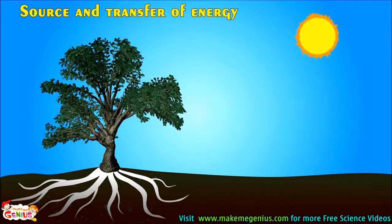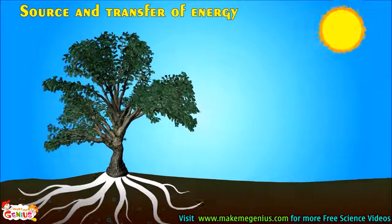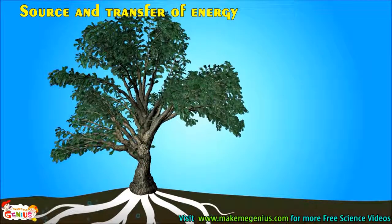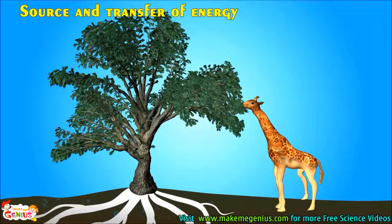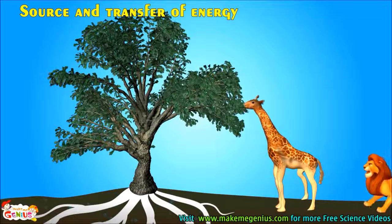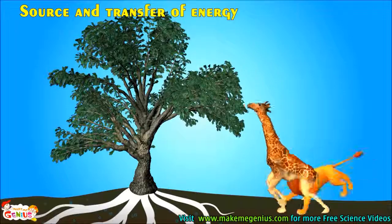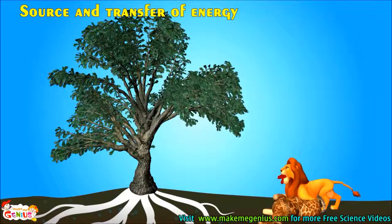Most living species use the sun's energy, which is transferred to the body via the food they eat. The sun gives light energy, which is used by plants to make food through photosynthesis. These plants are eaten by primary consumers and energy is transferred to them. Then secondary consumers eat these primary consumers and energy is transferred to them too.